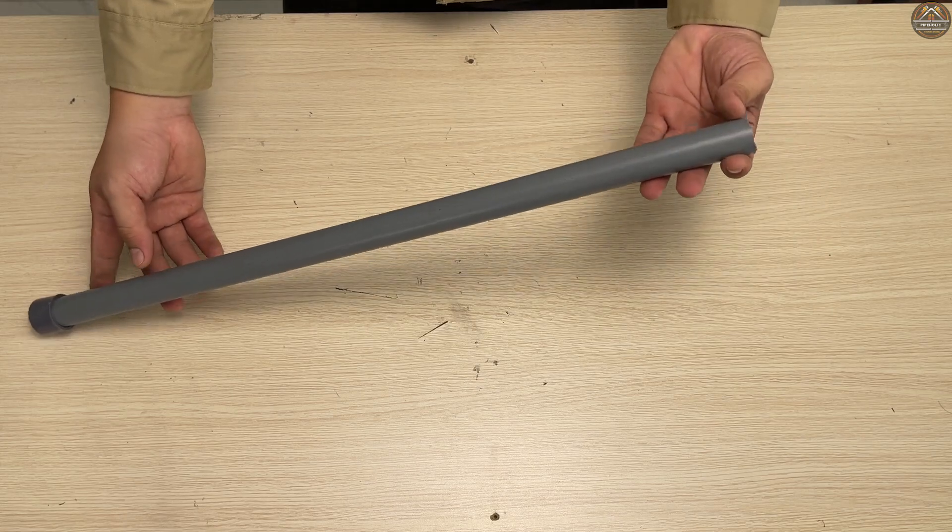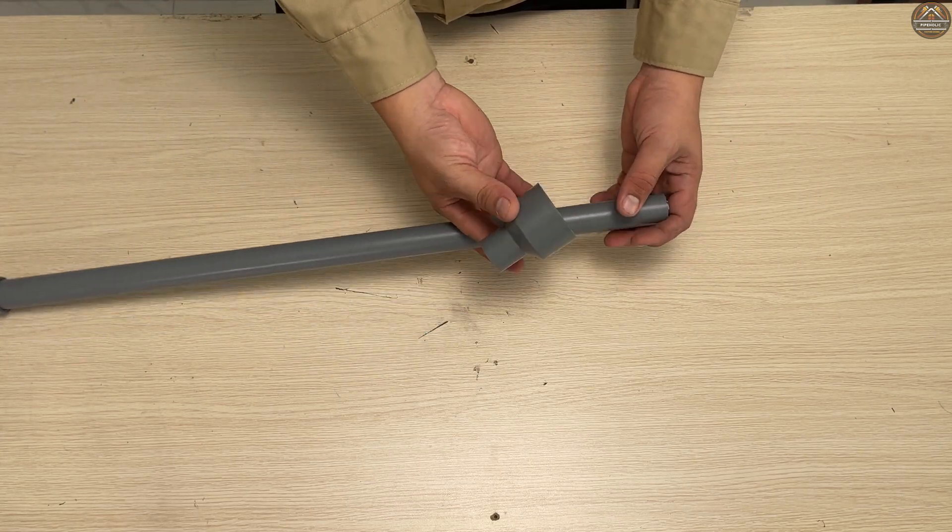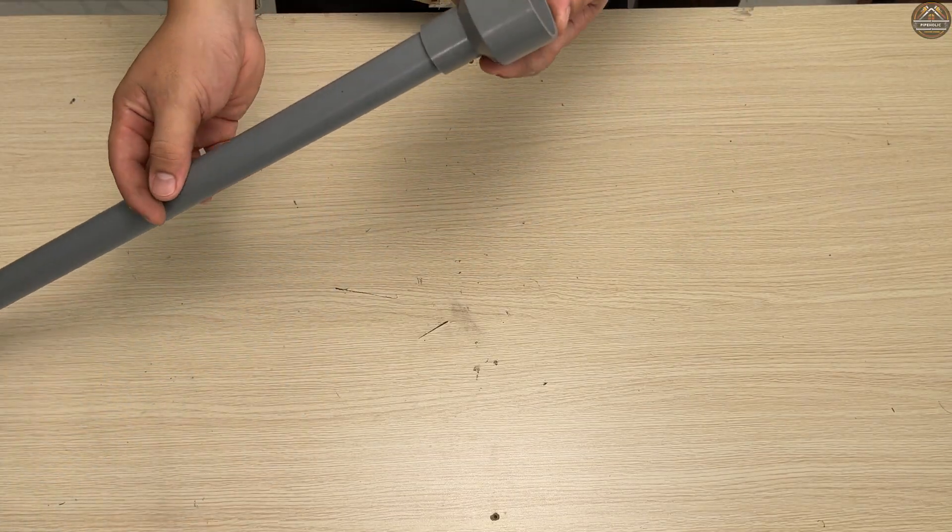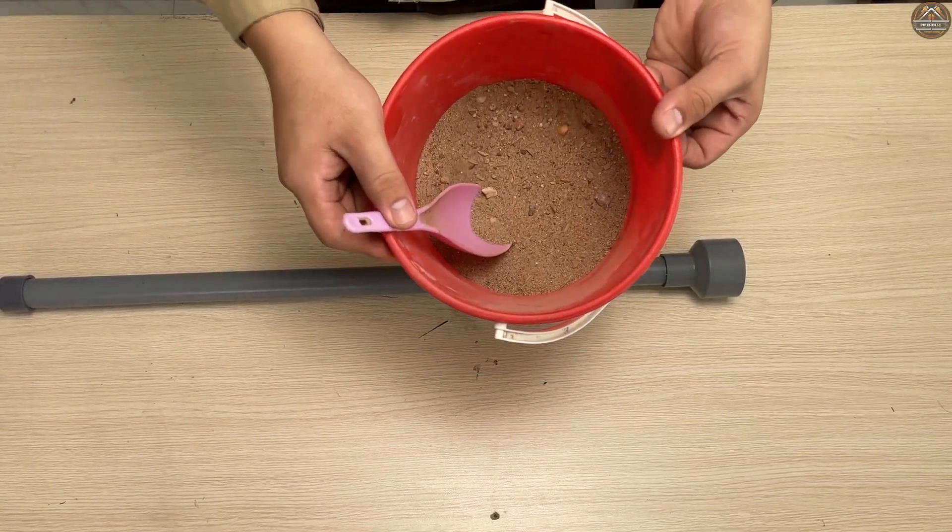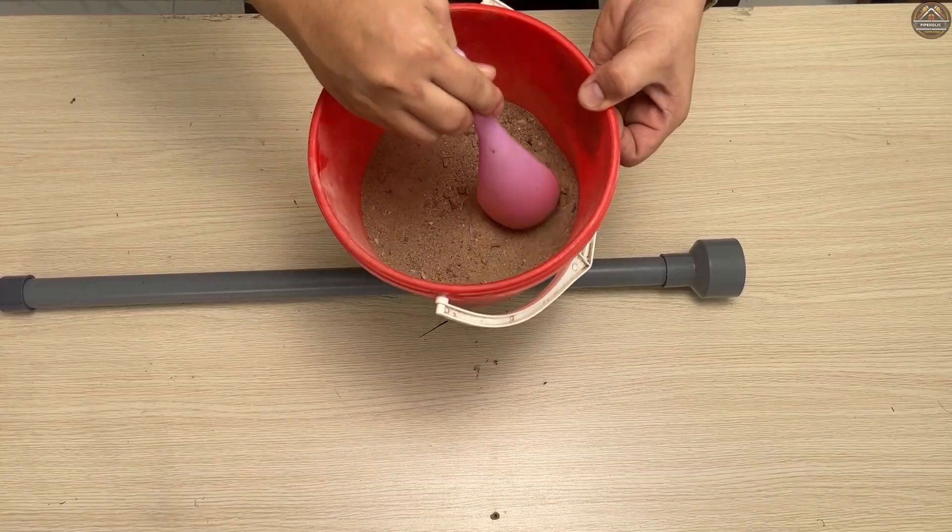First, grab a short piece of 21mm PVC pipe and cap one end. Then fill the pipe with sand. Once it's packed full, cap the other end.